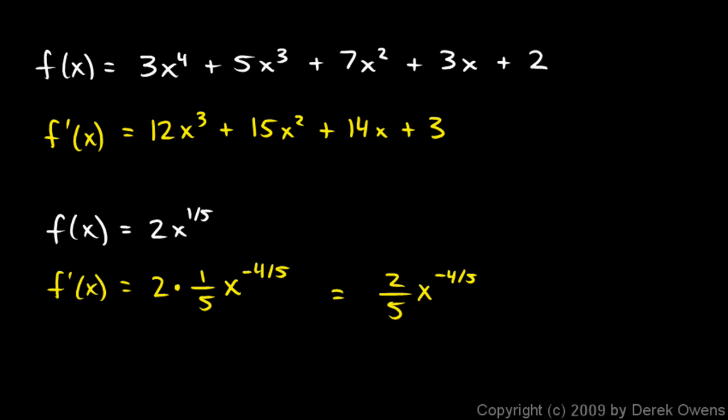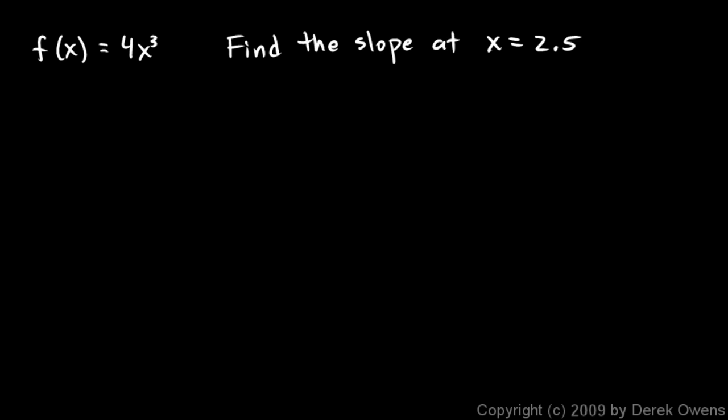Okay, and now we'll wrap up this section with a couple more examples that go into a little more detail on derivatives. So here's our next example. f of x is 4x cubed. So this is some function. It's a cubic function. And we're told to find the slope at x equals 2.5. Now if you want to get a mental picture, which I think is always helpful, a 4x cubed function is going to look something like this. And so at some x value 2.5, this is going to have a certain steepness. And that's what we're trying to find, the slope at x equals 2.5. And here's how we do it.